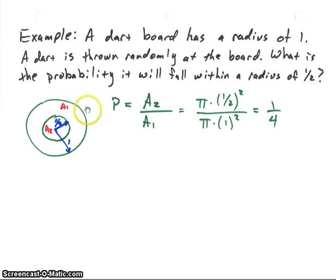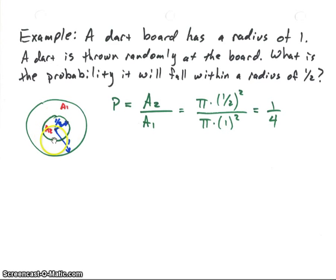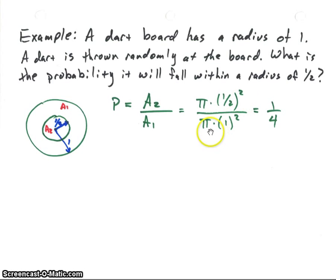Consider a dart board with radius one. We throw a dart randomly at the board and want to know the probability it lands inside a smaller circle of radius one-half. Since we're dealing with areas, the probability is the area of the inner circle divided by the area of the whole board. Area equals pi r squared, so we have pi times one-half squared over pi times one squared, which gives one-quarter. So the probability of landing in the smaller circle is one-quarter.